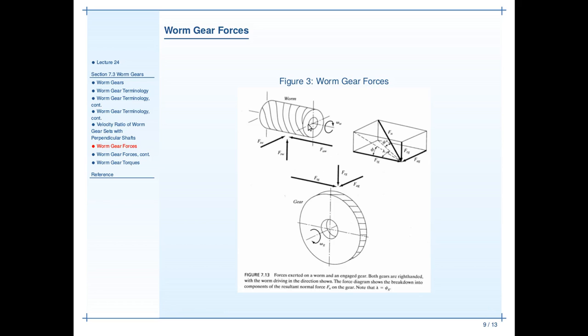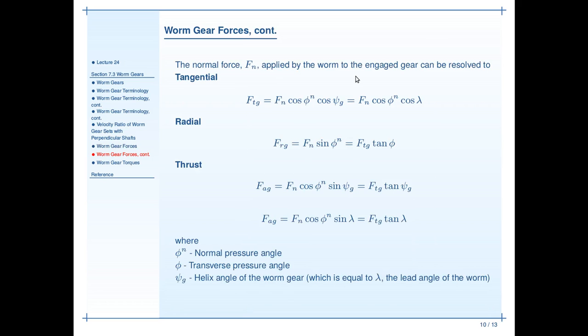The radial forces always work to push the gears apart. But note in this case that the axial force on the worm is the tangential force on the gear. The tangential force on the worm is the axial force on the gear. So we need to note that when we calculate forces on a worm or a gear in a worm gear set, that we have to identify whether those tangential forces are occurring on the gear or on the worm.